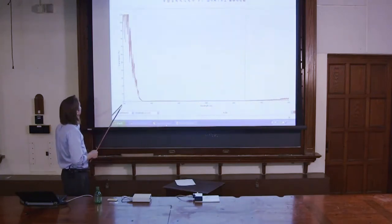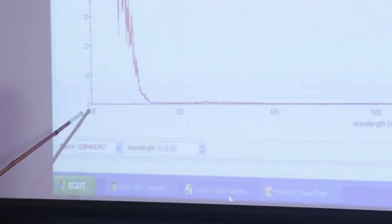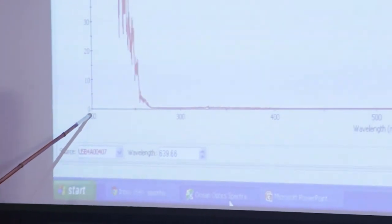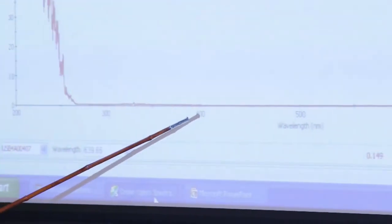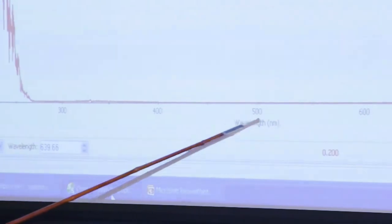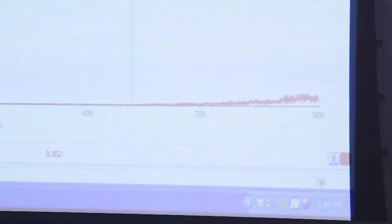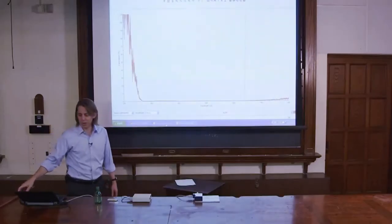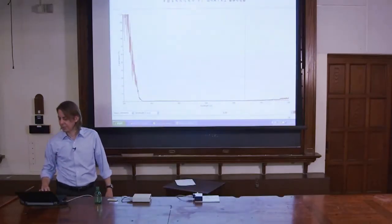So here we're plotting the transmittance, how much light gets through from 200, UV, this is all UV, up to 400, now this is the visible, 700 into the visible, and then the near IR. So we have a very broad spectral range that we get here because this lamp puts out a lot of light.